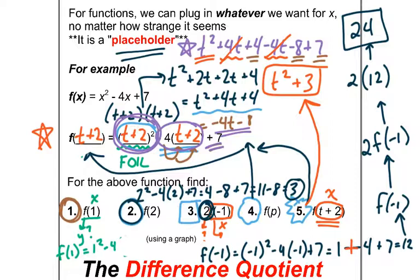Just to review: number 1 was okay, number 2 was okay, number 3 was a little tough because we had to multiply the 2 at the end. Number 4 was actually easier than we thought — we just plugged in p. But number 5 was a tough one, so make sure you put a star next to it or circle it so you can come back to it if you need to.